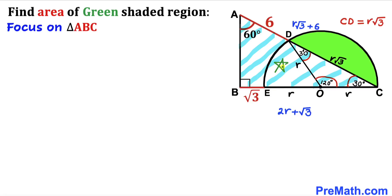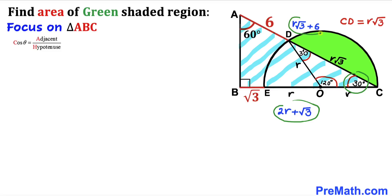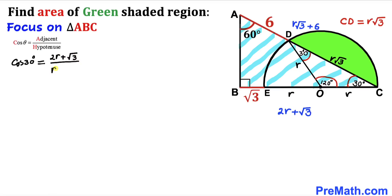Let's focus on right triangle ABC and recall that cosine of angle theta equals adjacent divided by hypotenuse. In our case, theta is 30 degrees, the adjacent side is 2R + √3, and the hypotenuse is R√3 + 6. So we can write: cos(30°) = (2R + √3) / (R√3 + 6).